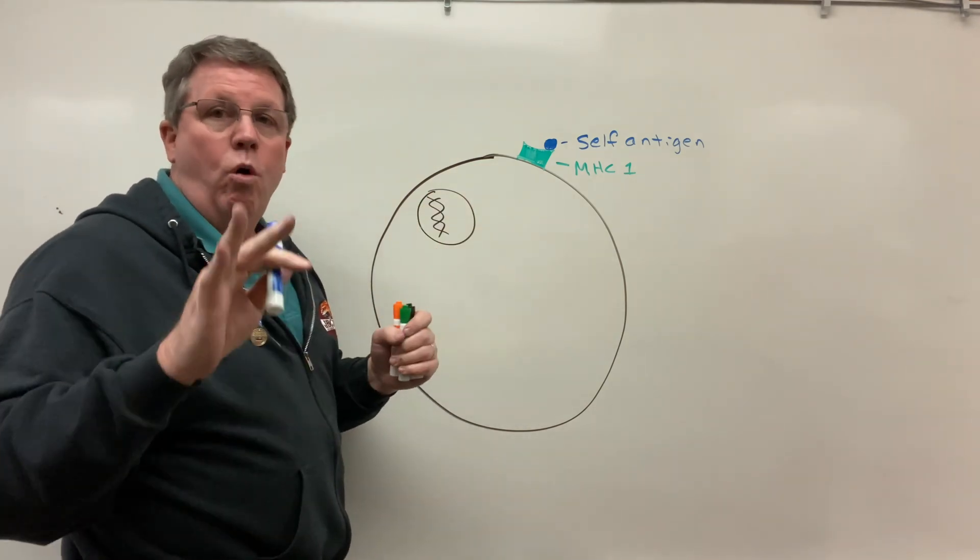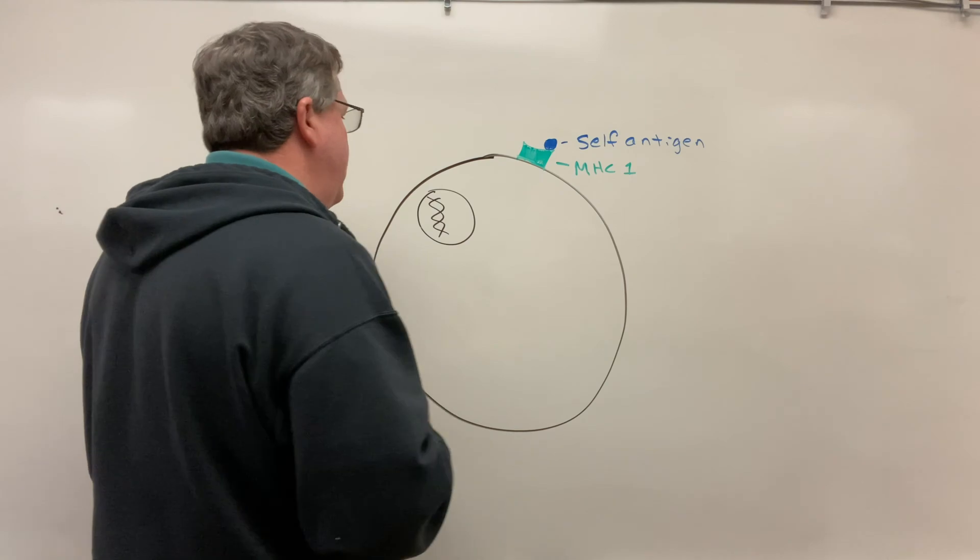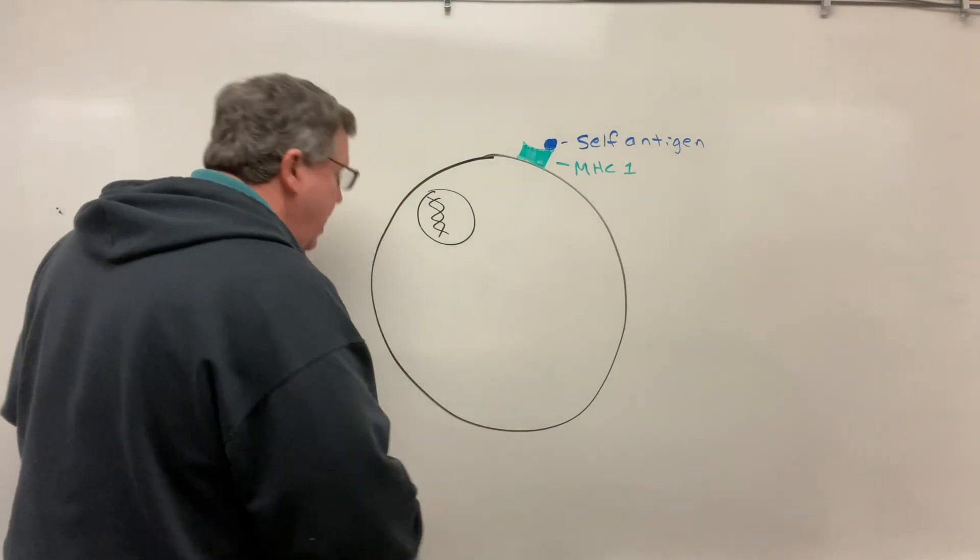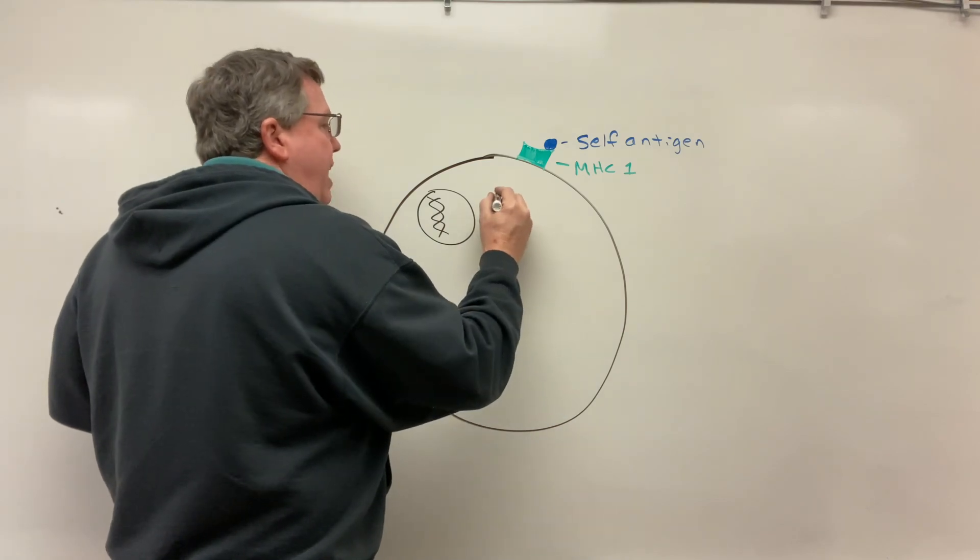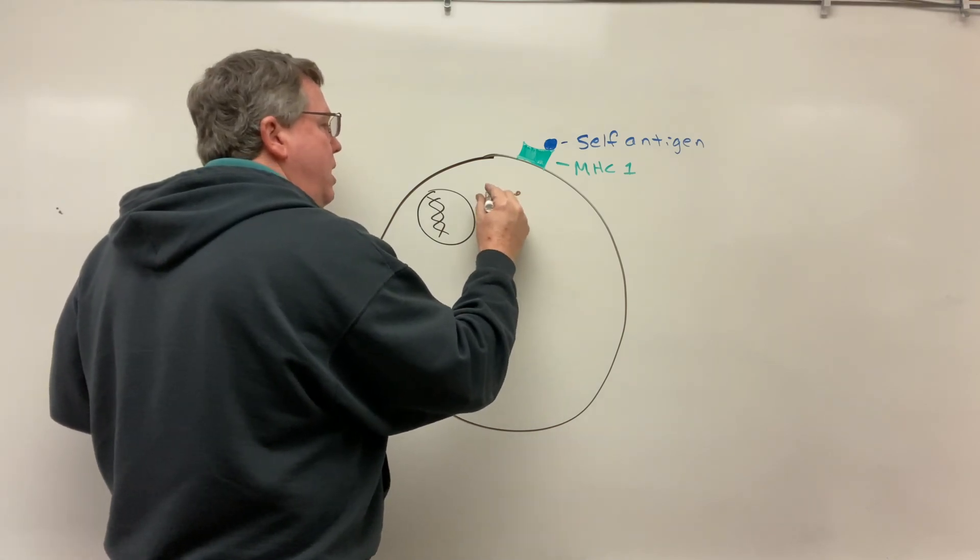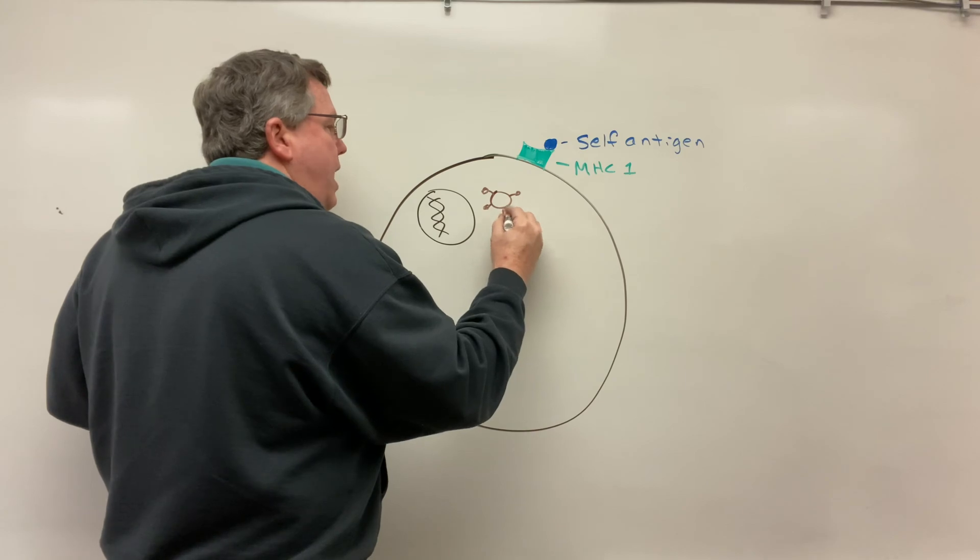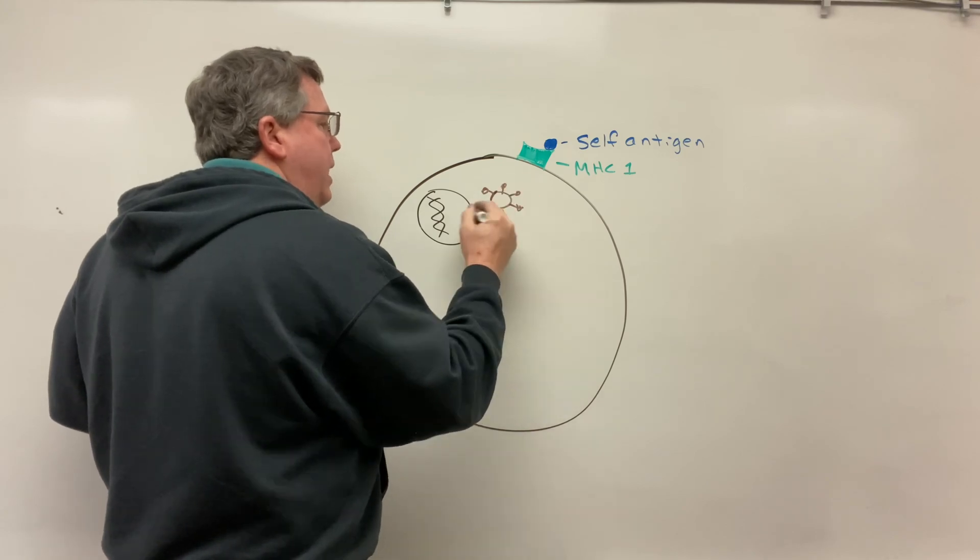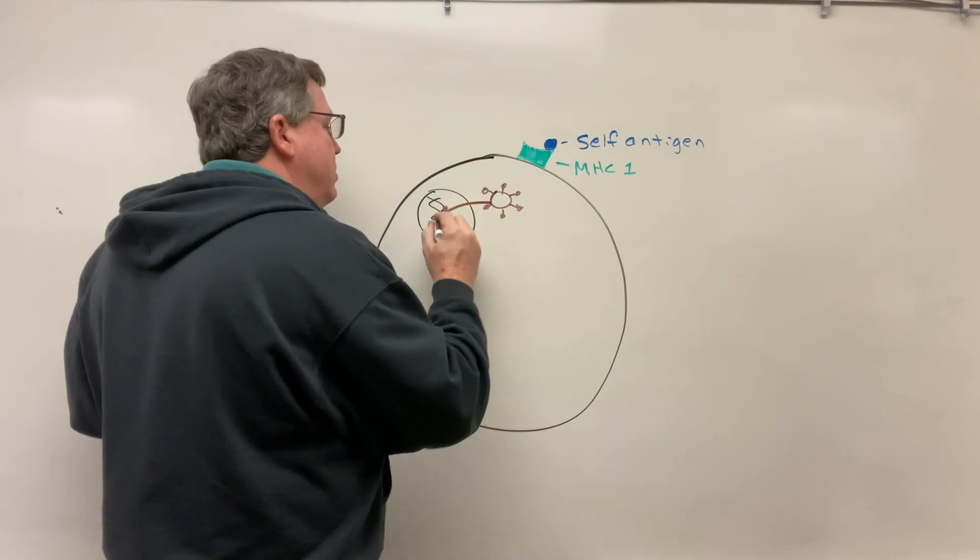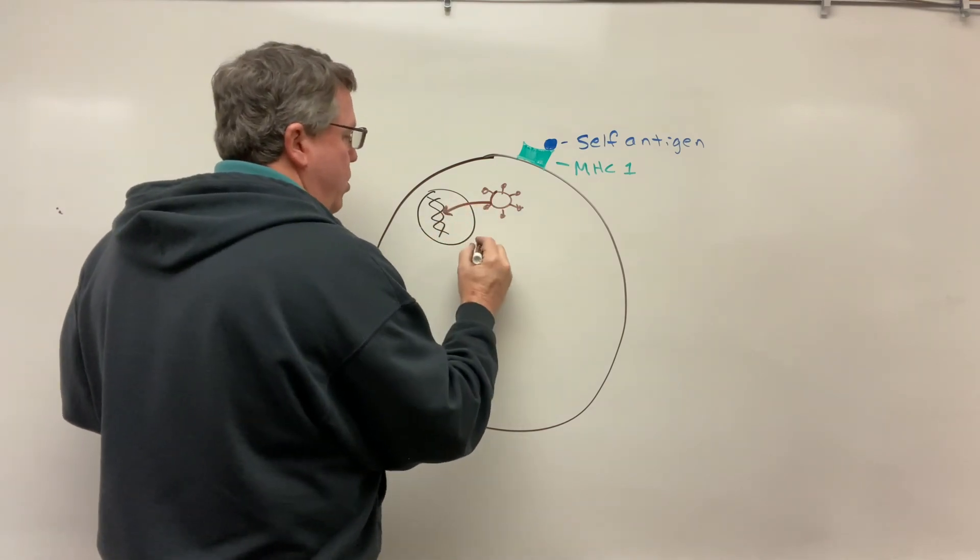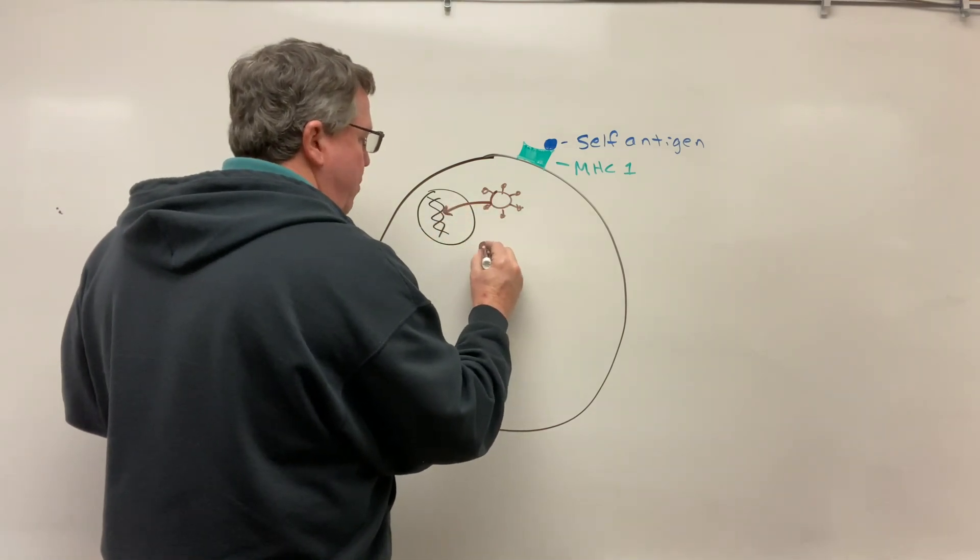Okay, now let's say somehow this cell gets infected by a virus, or this can also happen with cancer. So now what's going to happen is my virus is going to come in, and sometimes what can happen is the virus can actually combine with DNA, or it can actually do something called a ribosome. But either way, it can do something to where we are going to get viral protein, so this is going to be my viral protein now.